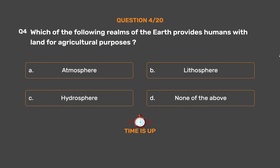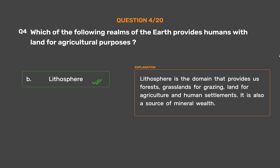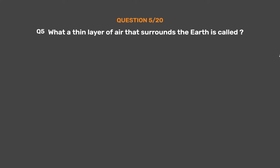The correct answer is Option B: Lithosphere. The lithosphere is the domain that provides us forests, grasslands for grazing, land for agriculture and human settlements. It is also a source of mineral wealth.